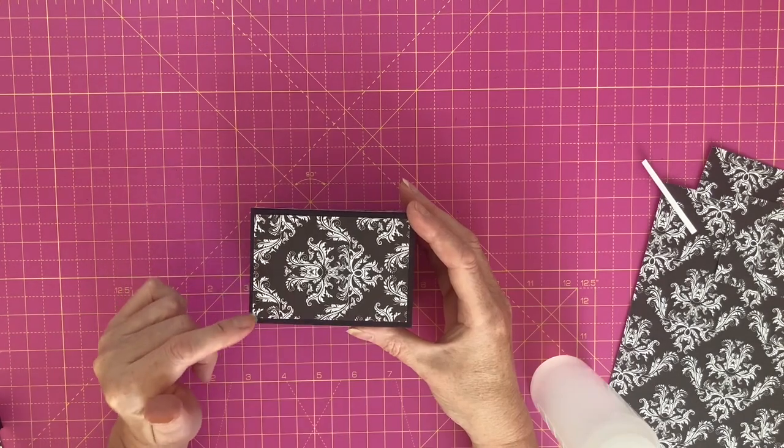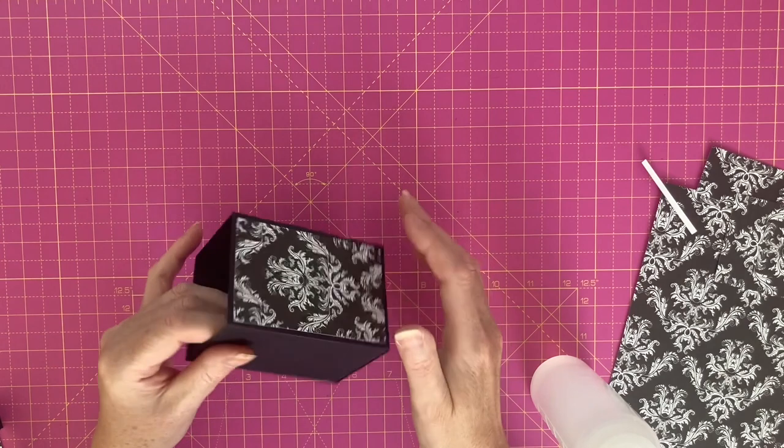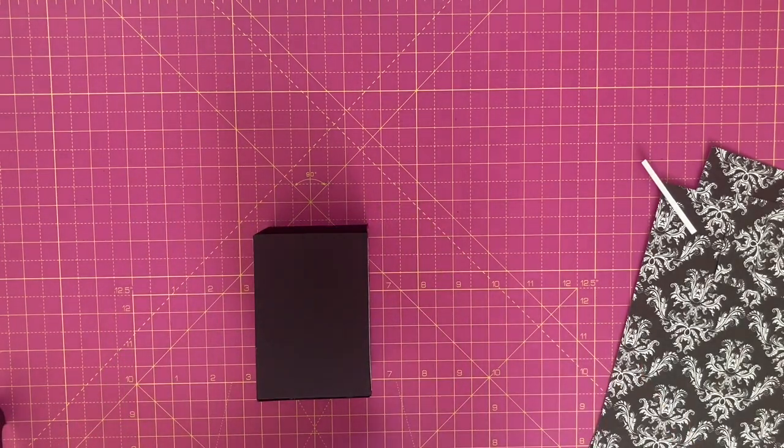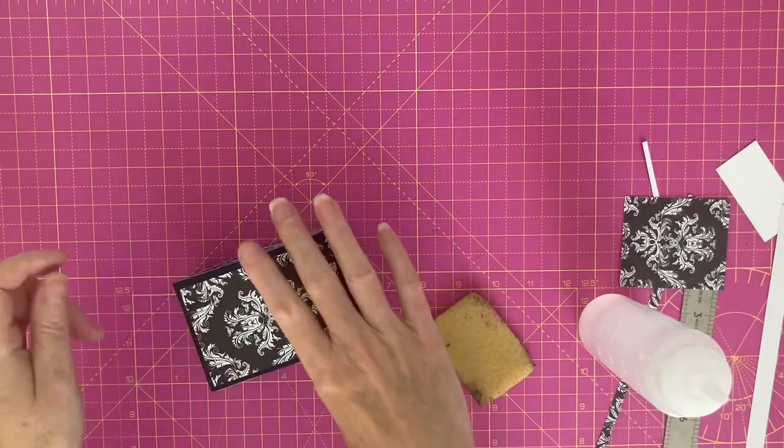I'm just trying to make sure that the top edge of the patterned paper is aligned around the rim because this bottom bit is going to be covered so it's not so important. There we are.